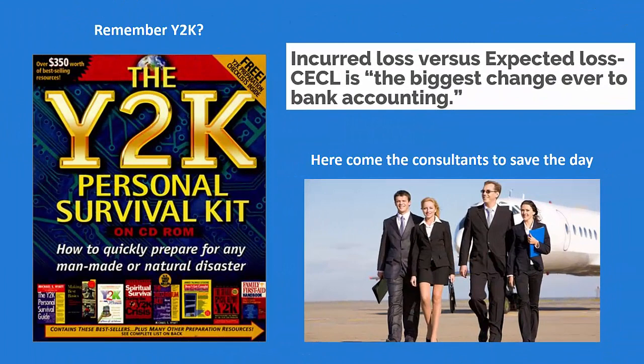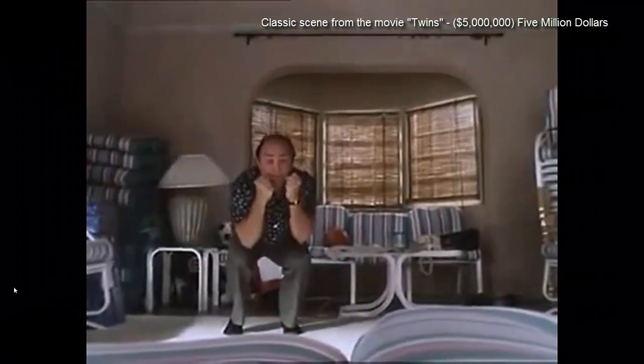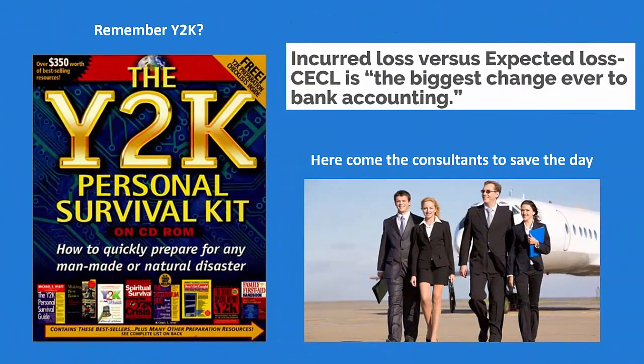So this change in approach to calculating the loan and lease loss reserve is huge. A lot of articles, you've seen it over and over again. Here's a headline here, incurred loss versus expected loss. CECL, in other words, is the biggest change ever to bank accounting. Where have we heard this? It's the biggest thing happening to the IT world. Well, you know, we sort of chuckle at Y2K. The world was going to come to an end and hire mass amounts of consultants, spent a ton of money to get all our systems ready. Five million dollars for Y2K. And it's sort of the same response we're getting today. You're getting all these consultants coming out of the woodwork and say, we're here to help you come up with predictive models to solve this CECL mess that you're in.